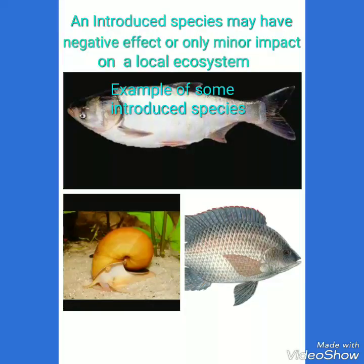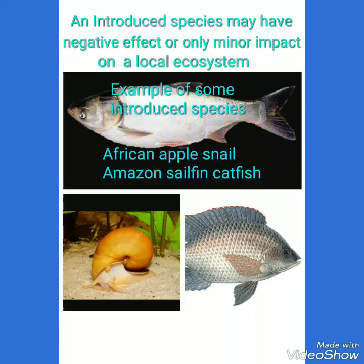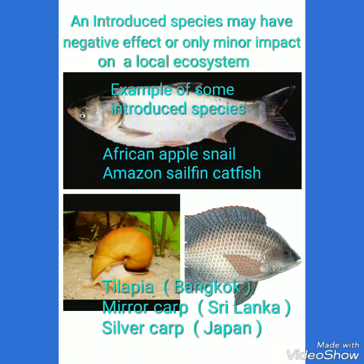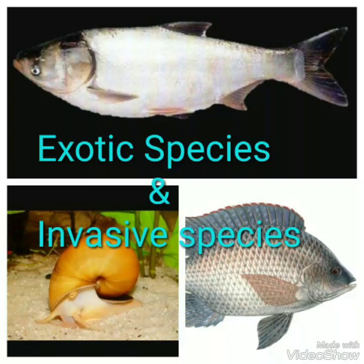There are some examples of introduced species: the apple snail, which is brought to India from Africa; the catfish, brought to India from the Amazon; tilapia fish, brought from Bangkok; middle carp, from Sri Lanka; and silver carp from Japan.